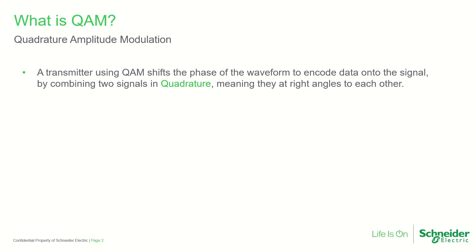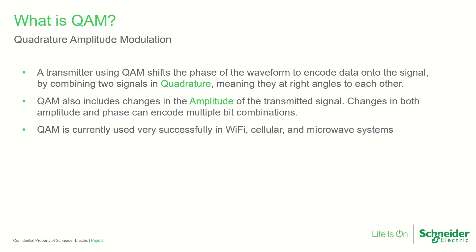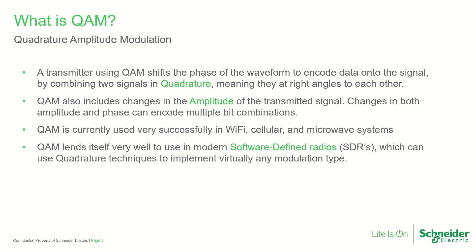First, we need to understand what QAM is and a little bit about how it works. A transmitter using QAM combines two signals that are in quadrature, meaning they are at right angles to each other. Making changes in both amplitude and phase can encode multiple bit combinations. This technology is currently used in Wi-Fi, cellular, and microwave systems.